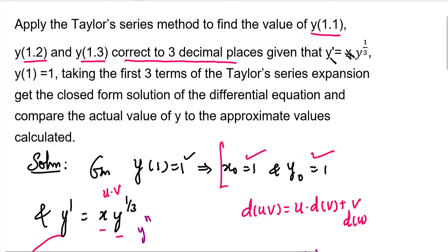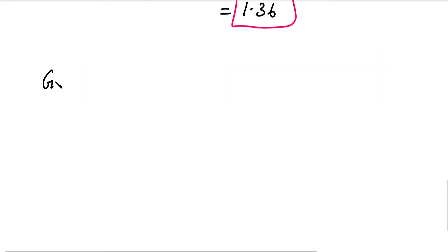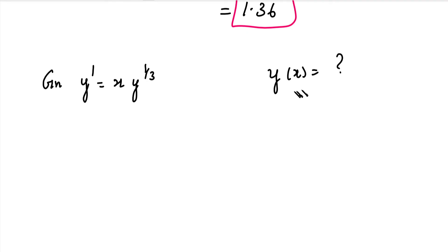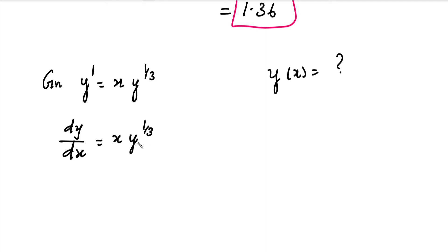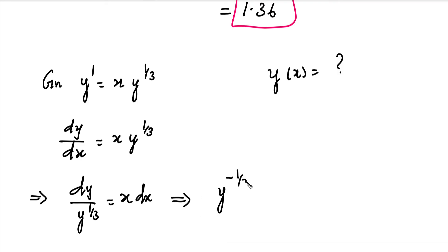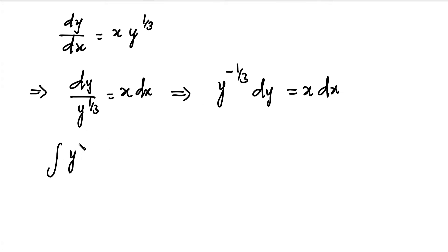Now we solve the differential equation exactly. Given y' = x·y^(1/3), we substitute y' = dy/dx, then separate variables: dy/y^(1/3) = x·dx. Now we integrate both sides.